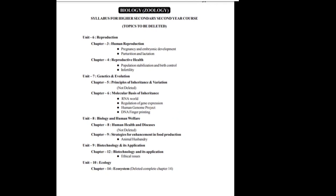Unit 6 has Reproduction, and in zoology, Chapter 3 is 'Human Reproduction.' From human reproduction, pregnancy and embryonic development, parturition and lactation are deleted. So the main embryonic development and the post-delivery and breastfeeding parts are deleted.